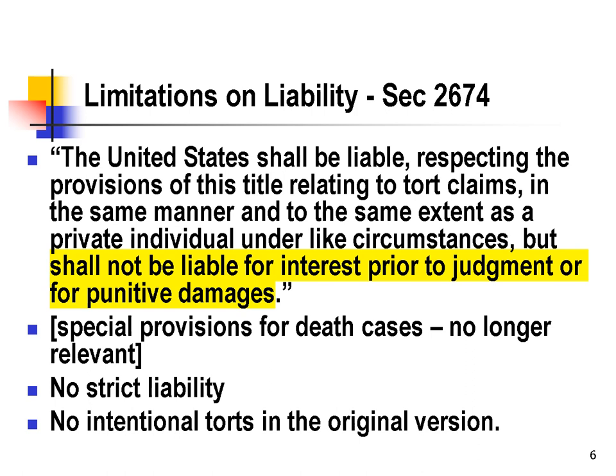There are significant limitations on liability in the Federal Tort Claims Act as compared to state tort law. One critical dimension is there's no liability for interest prior to judgment and there's no liability for punitive damages. There are some special provisions for damages in death cases, but that's more of historic interest. When the statute was passed, certain states had significant limitations on damages in death cases and the Act wanted to provide some recovery in those cases.